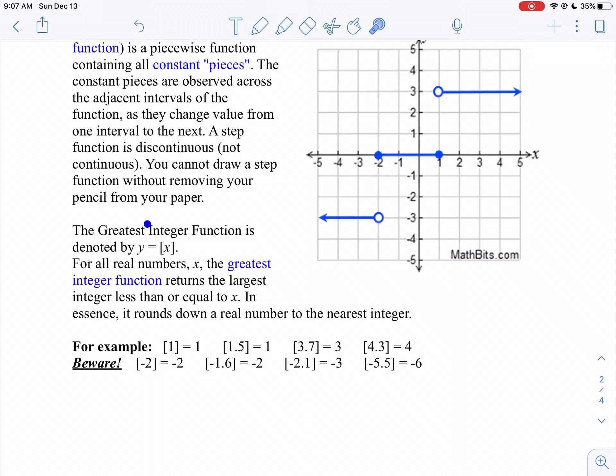It's the biggest integer that's less than or equal to your number. And we usually denote it by brackets, or sometimes it'll be like half of a bracket.